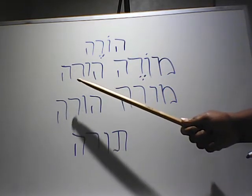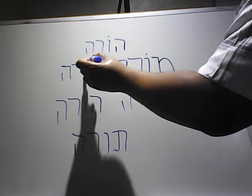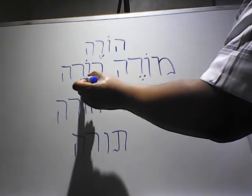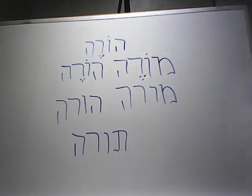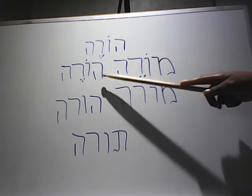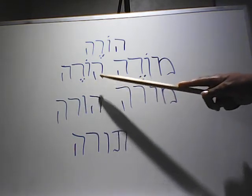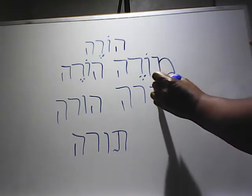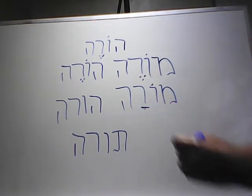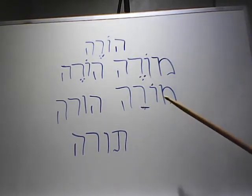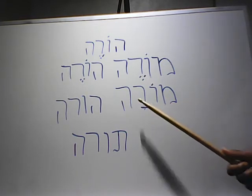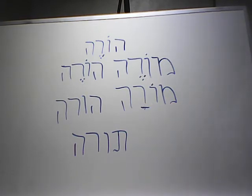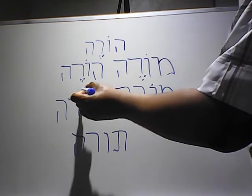Then we have this word, and we can say it also as hora. Now in this case we're not dealing with it as a verb but as a noun, and this means parent — a male parent. Then we have the word mora, meaning teacher — a female teacher.